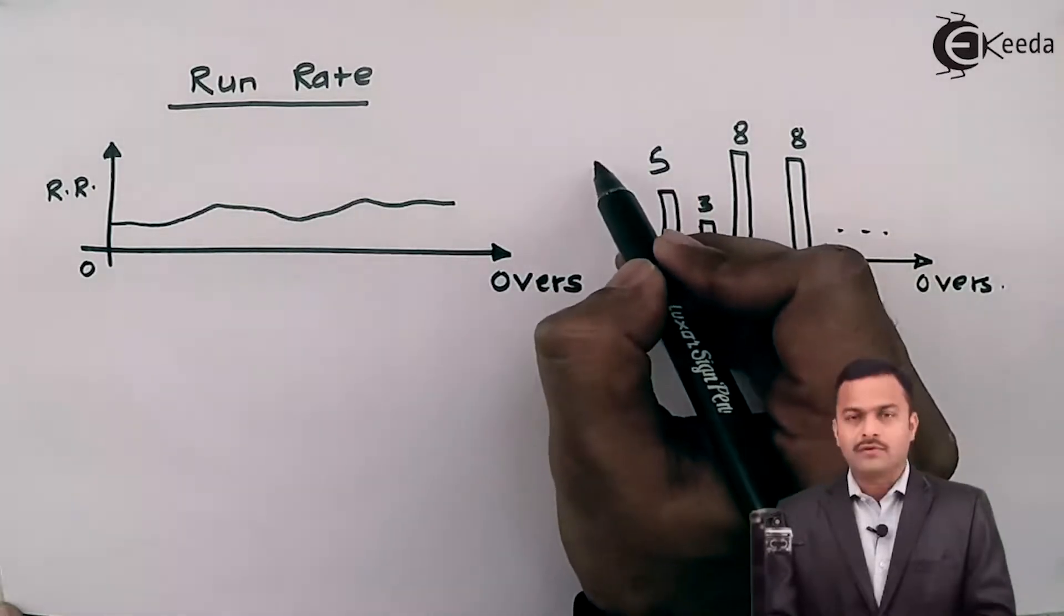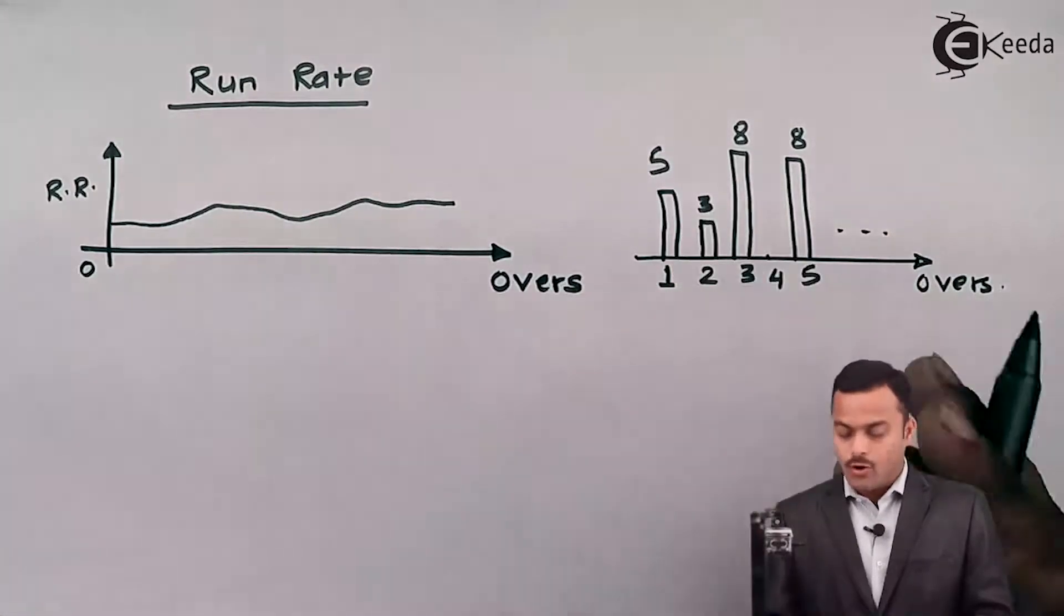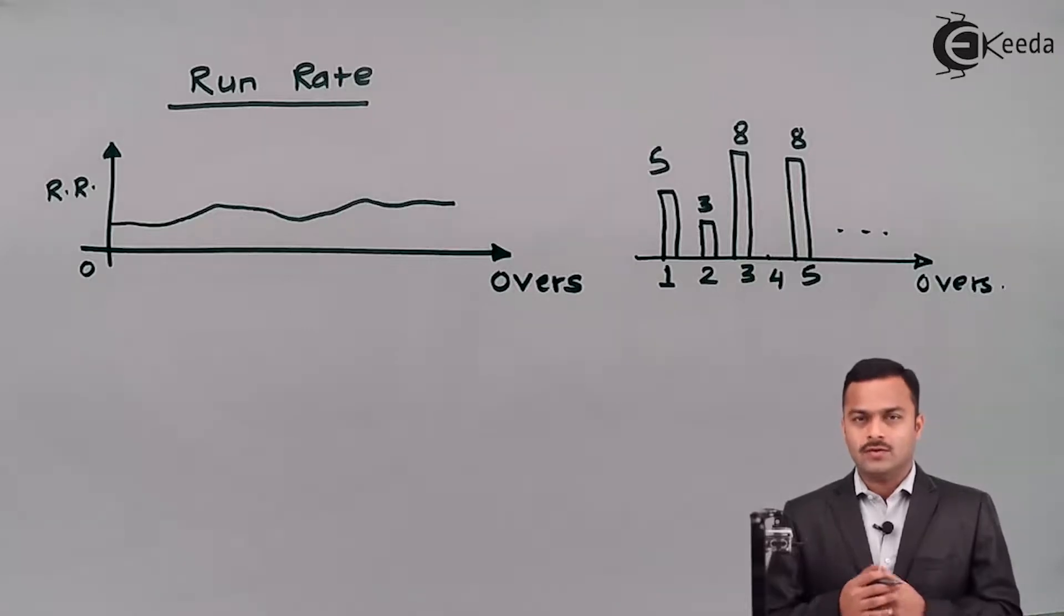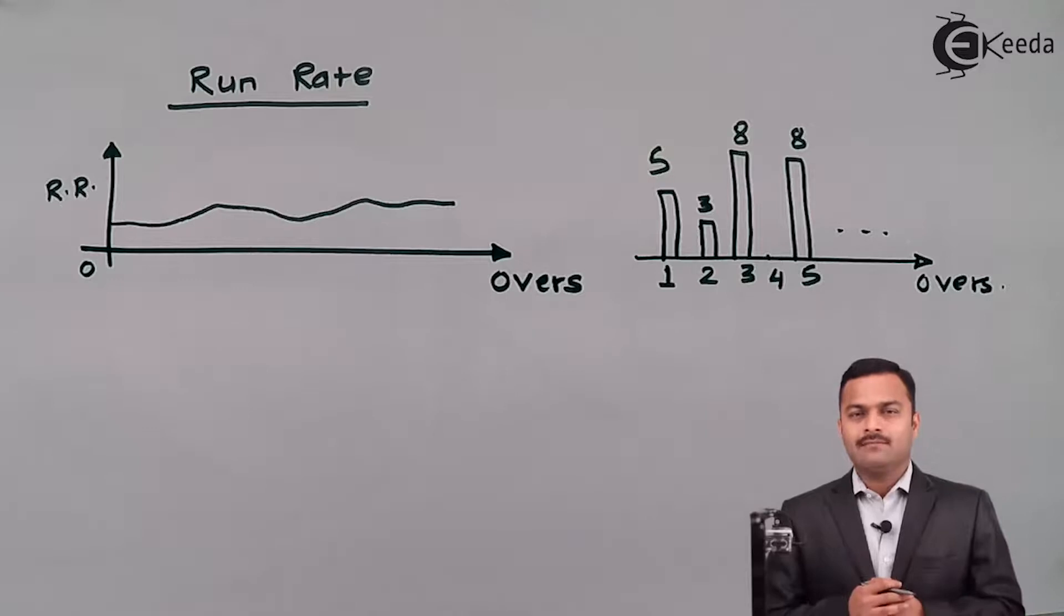So that can also be considered as a signal. So there are various types of signals we can see, not only in one particular domain but each and every domain. For example, we can have a graph of temperature against days.